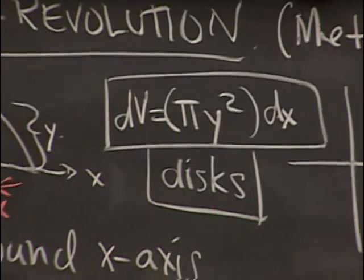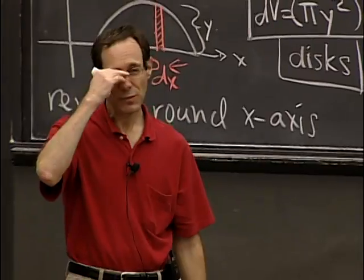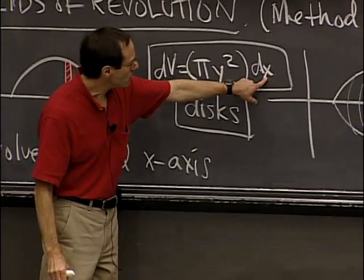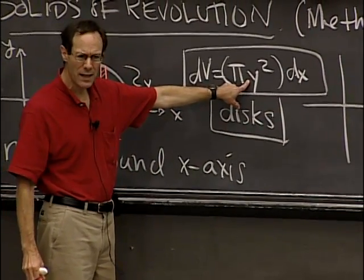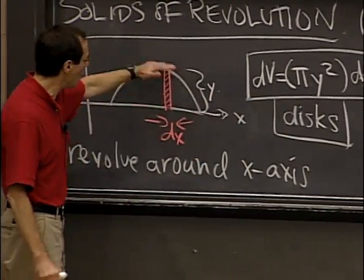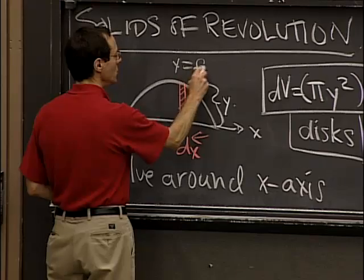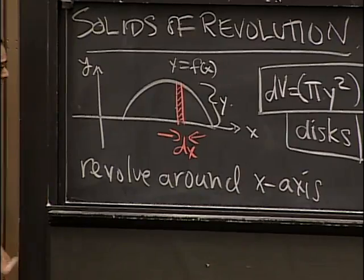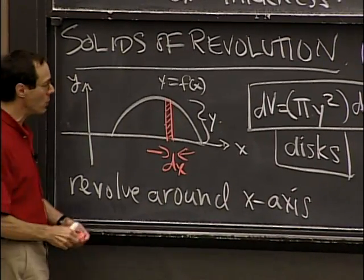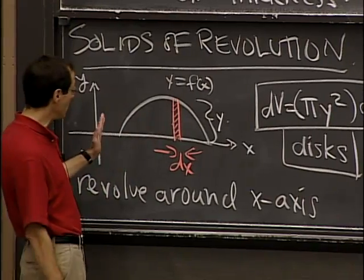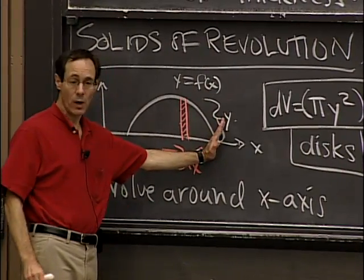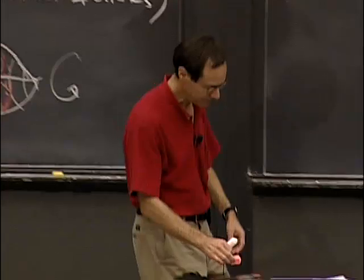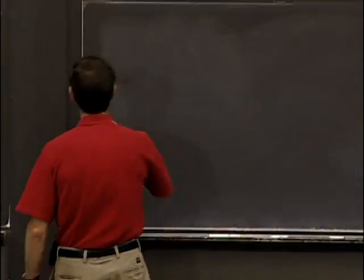There's one peculiar thing you should notice immediately: I'm integrating with respect to x, and I haven't yet told you what y is. That will depend on what function y = f(x) I use, so we have to plug that in eventually. There's another very important point: in order to get a definite integral, we're going to have to figure out where we're starting and ending — which is something we dealt with last time in 2D pictures.